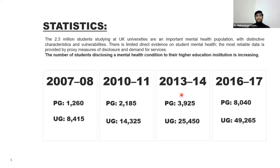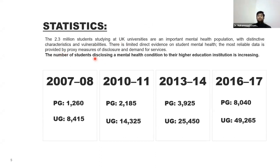A study conducted in UK universities from 2007 to 2017 covering 2.3 million students identified them as an important mental health population with distinctive characteristics. The number of students disclosing mental health conditions to their higher education institution is increasing as awareness grows. Once students know about psychiatric issues, they start talking to parents and teachers and seeking help.